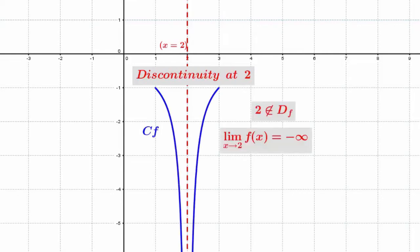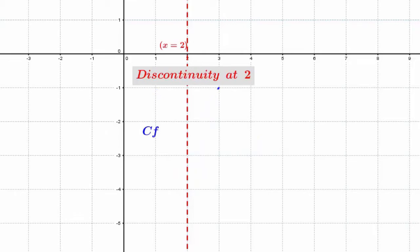The two pieces of the graph cannot be connected at 2 because of the vertical asymptote. That's why the function is discontinuous at 2.